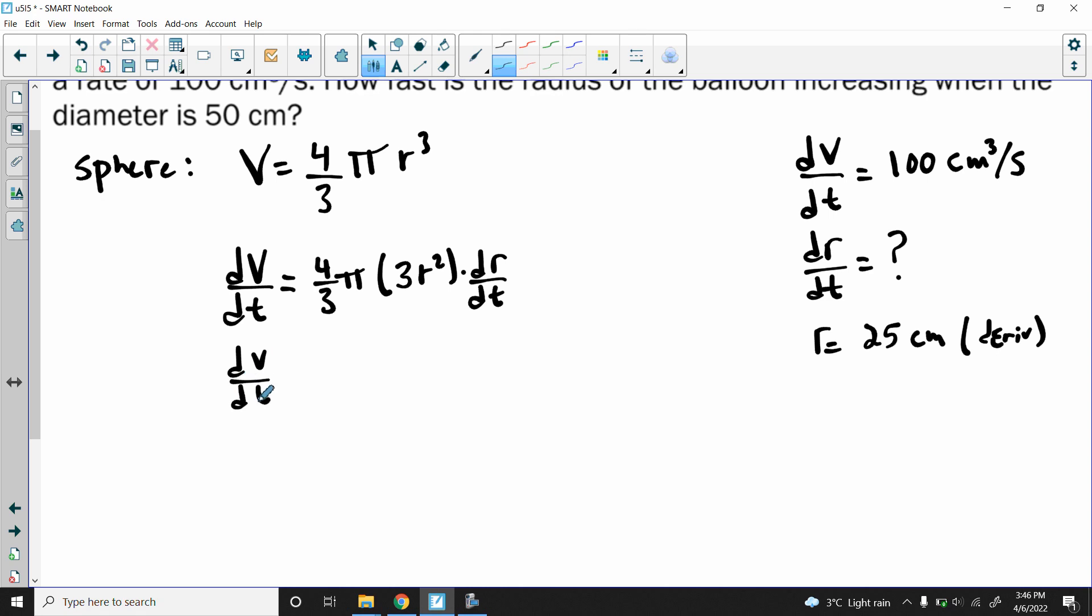Now I'm just going to tidy this guy up a little bit. The only real thing that can happen here is I can cancel this three and this three because it's divided by three and times by three. So I end up with four pi r squared times dr/dt.